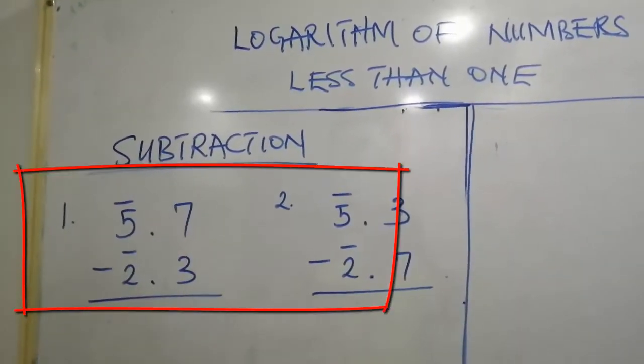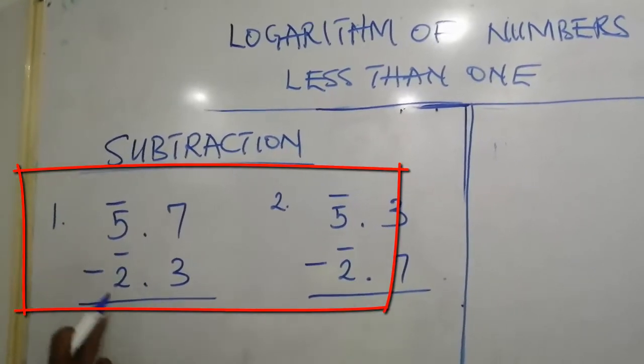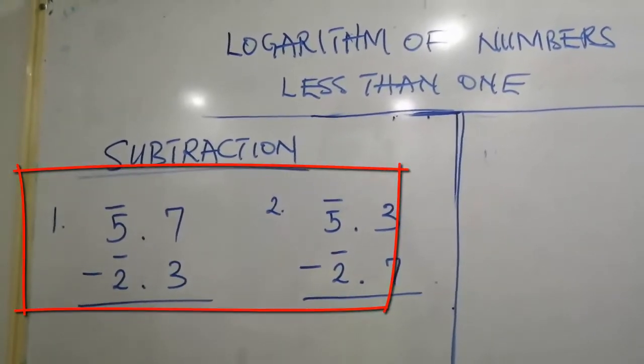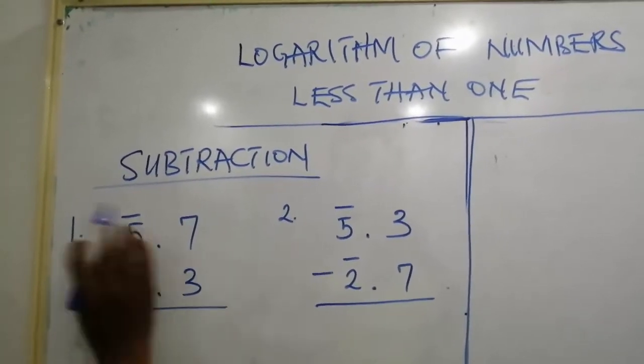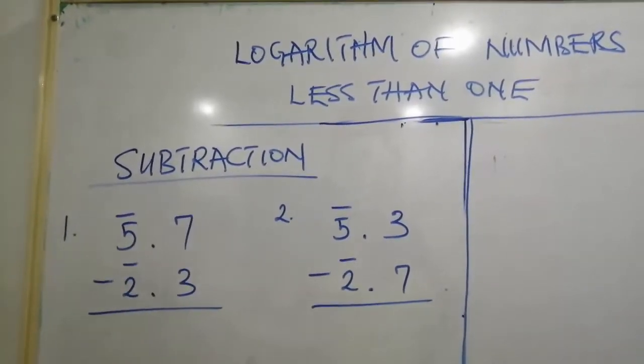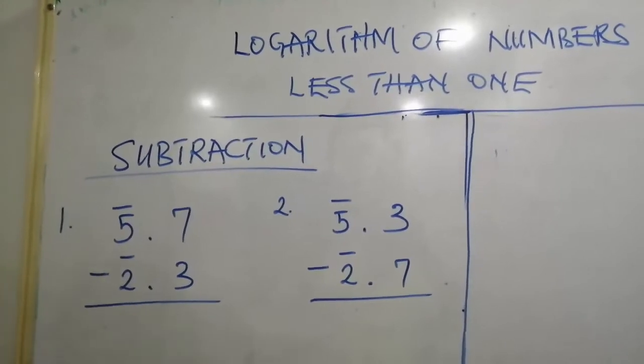Bar 5.7 minus bar 2.3. That is, we want to take bar 2.3 away from bar 5.7. To perform this arithmetic,